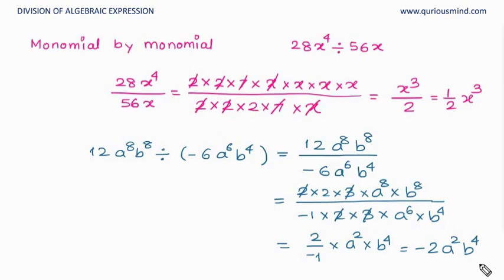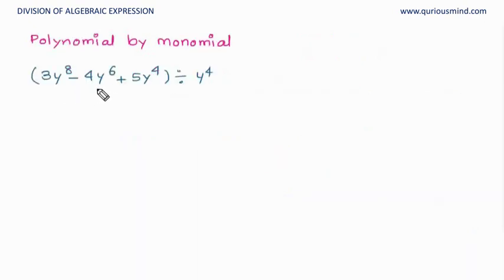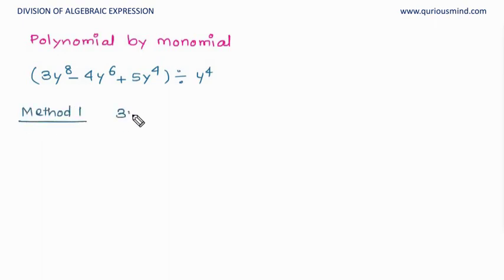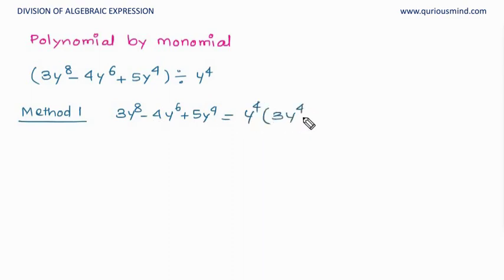Let's now do a polynomial divided by a monomial: 3y⁸ − 4y⁶ + 5y⁴, divided by y⁴. There are two ways we can do it. In Method 1, we first factorize the polynomial. What is common? y⁴ seems to be common, so we factor it out and get y⁴(3y⁴ − 4y² + 5). We are not going to factorize further because we only need to divide by y⁴.